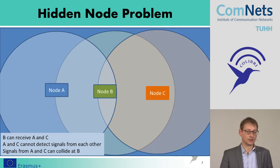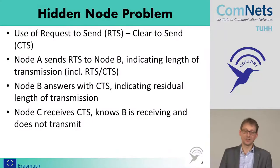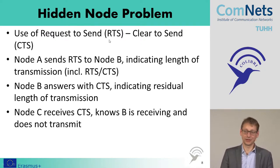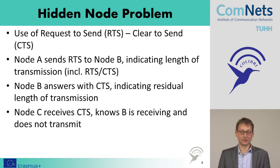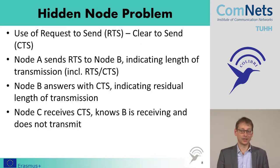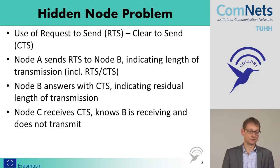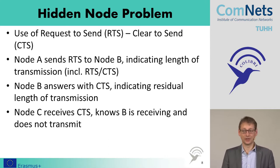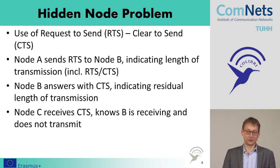To address the hidden node problem, you can use a request-to-send and clear-to-send mechanism: RTS/CTS. Node A sends a Request To Send to node B indicating the length of the transmission. Node B, the center node, answers with a Clear To Send indicating the residual transmission time. Node C can receive from node B, so it receives this CTS and learns that node B is receiving from someone else, and knows how long that will last — so it will not transmit during that time.